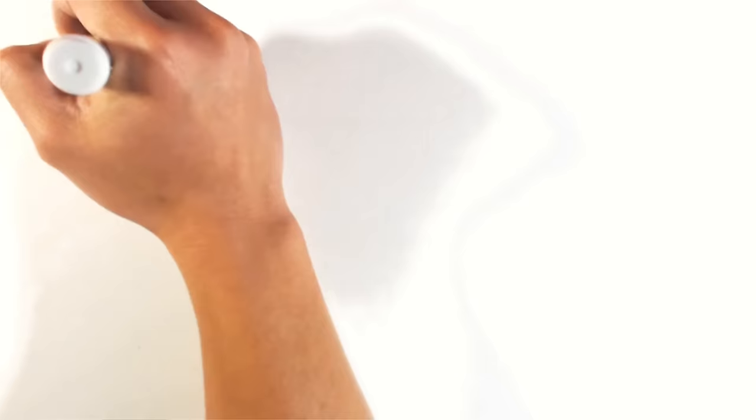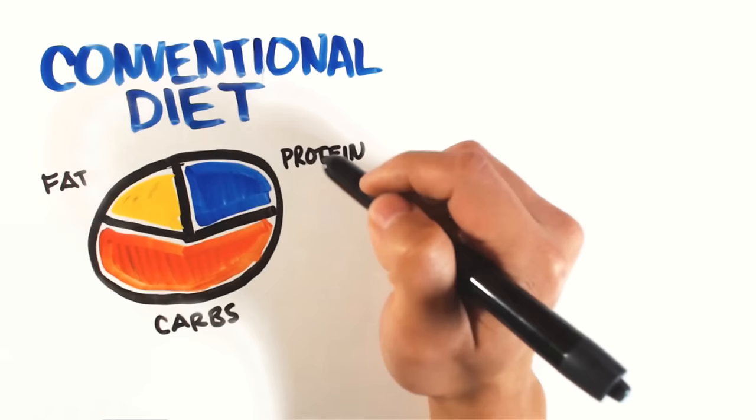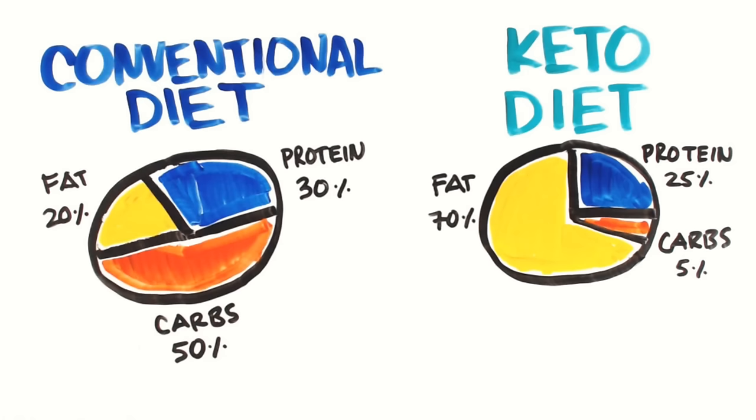The keto diet is also very food restrictive. A conventional diet has you eating roughly 20% fat, 30% protein, and 50% carbs. The keto diet, on the other hand, shifts you all the way to 70% fat, 25% protein, and 5% carbs, or below 30 grams.